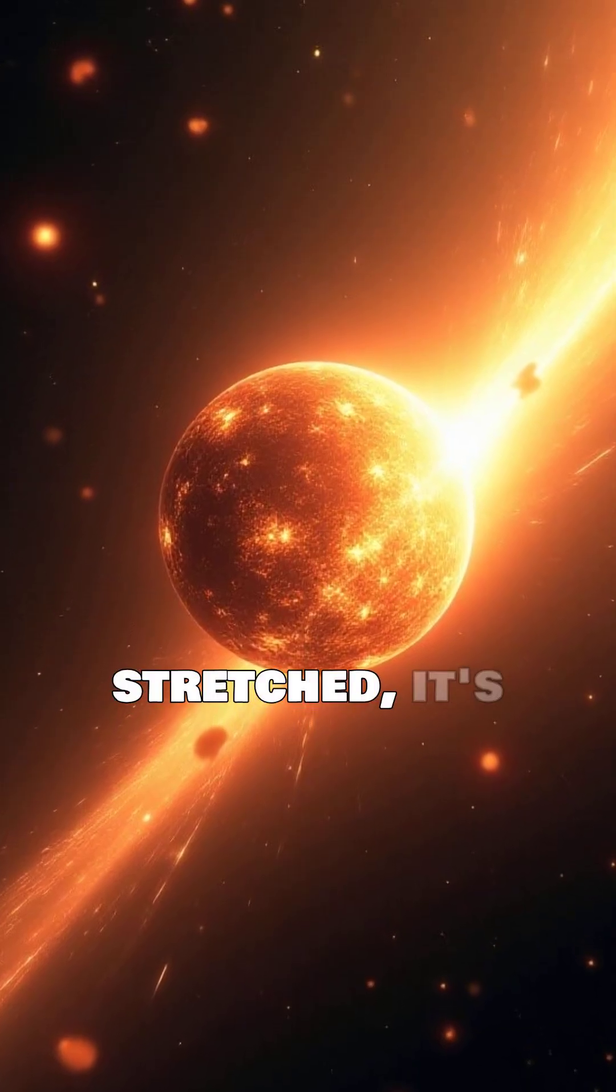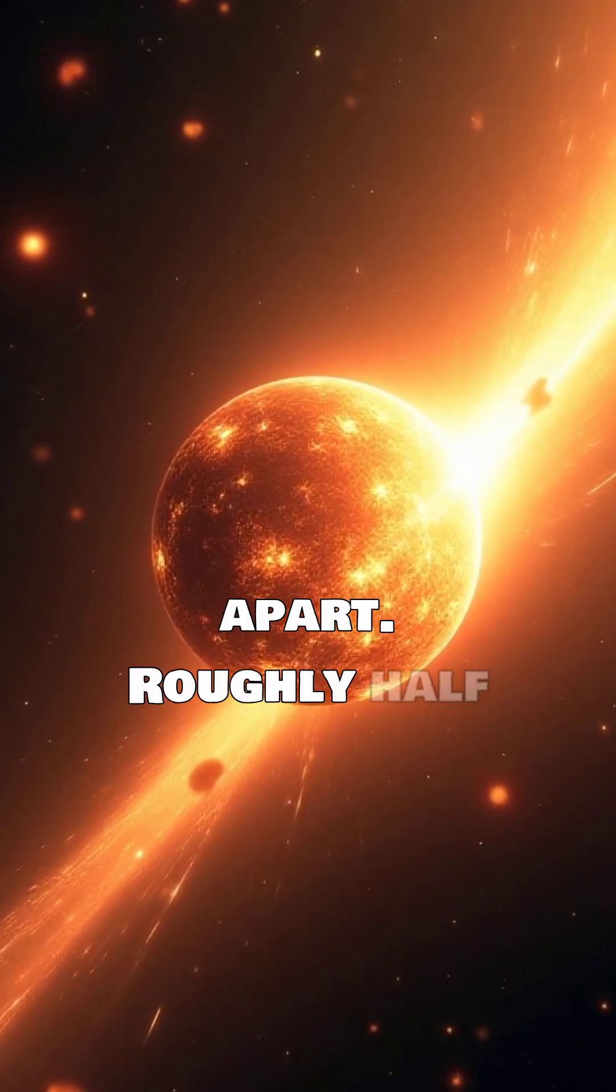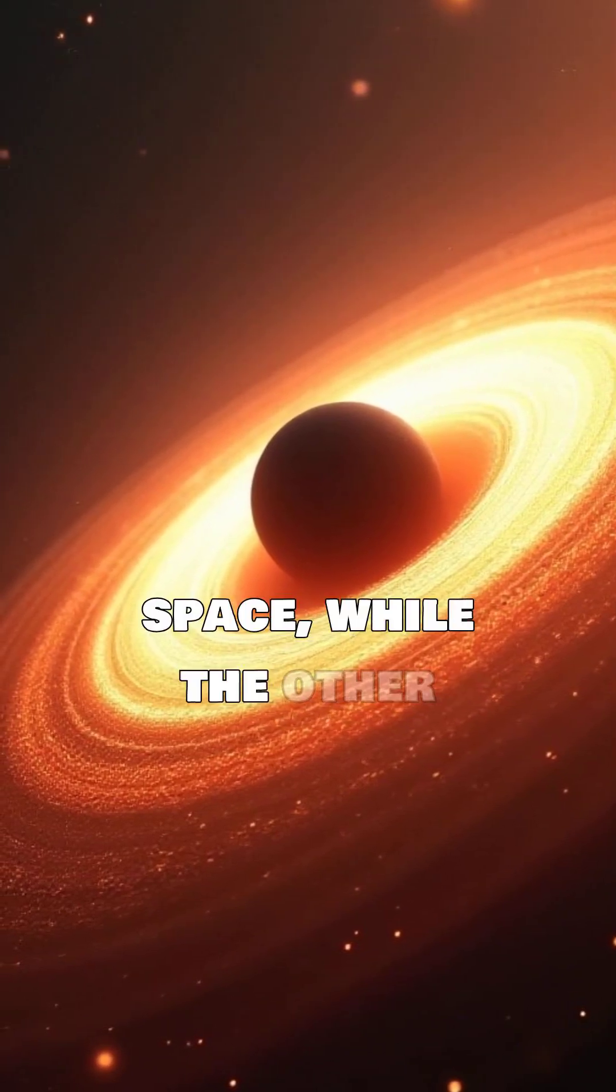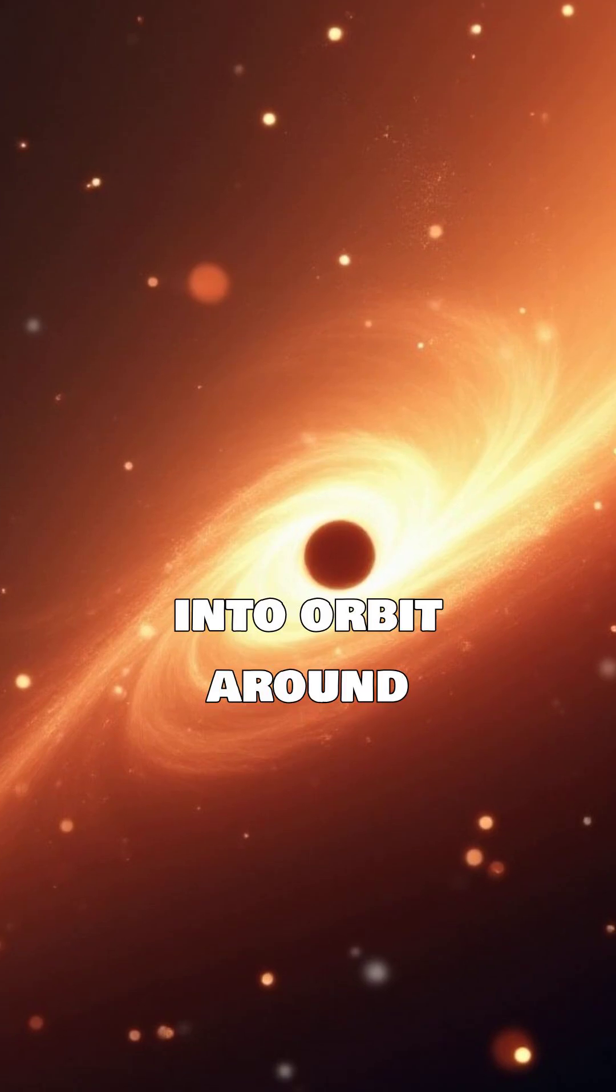As the star is stretched, it's torn apart. Roughly half of its material is violently ejected into space, while the other half falls into orbit around the black hole.